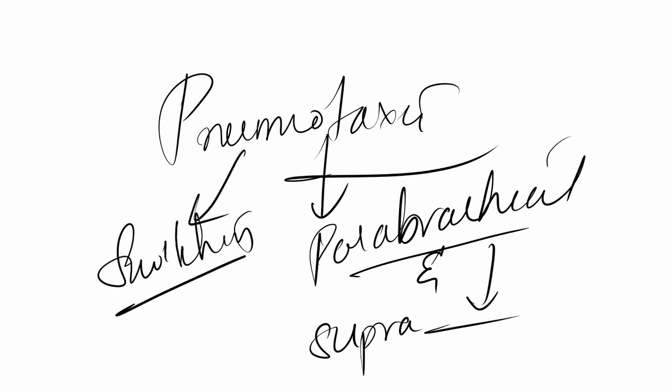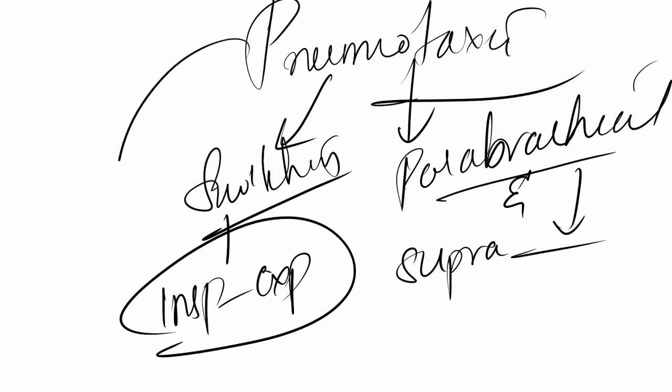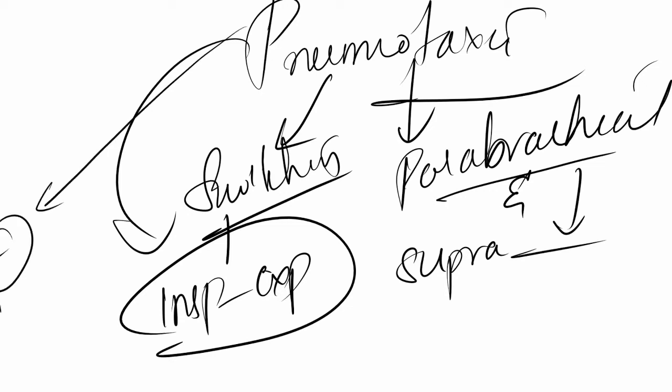The main function of the pneumotaxic center is switching — switching from inspiration to expiration. This is where we finally find the answer to what regulates expiration. The pneumotaxic center does this by inhibiting the dorsal nucleus. Left alone, the dorsal nucleus will keep inspiring; for expiration you need to stop it. The pneumotaxic center interferes and inhibits the dorsal nucleus to bring about expiration.